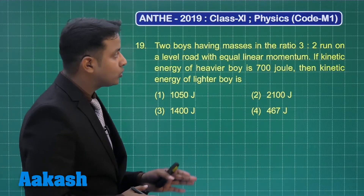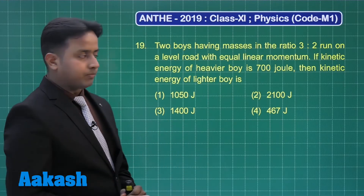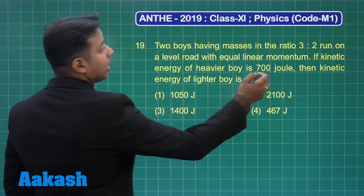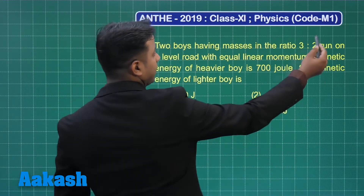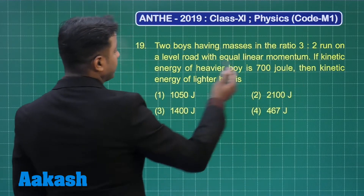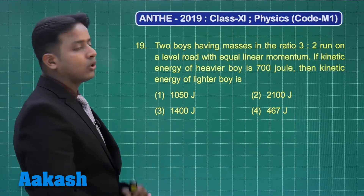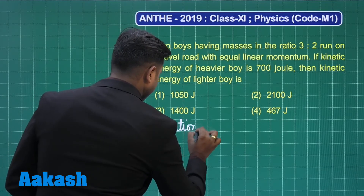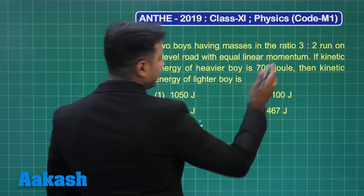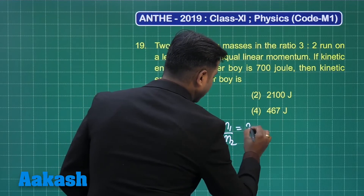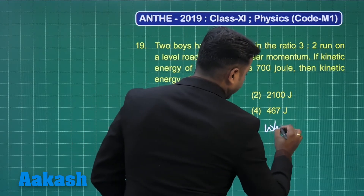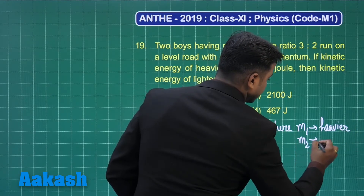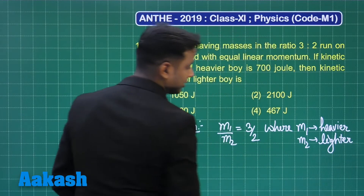Since they have equal linear momentum but different masses, they have different velocities. With mass ratio 3 to 2, the heavier one has ratio 3 and the lighter one ratio 2. If the kinetic energy of the heavier boy is 700 joules, we need to find the kinetic energy of the lighter boy. Let us label them M1 and M2 with M1/M2 = 3/2, where M1 is the heavier one.